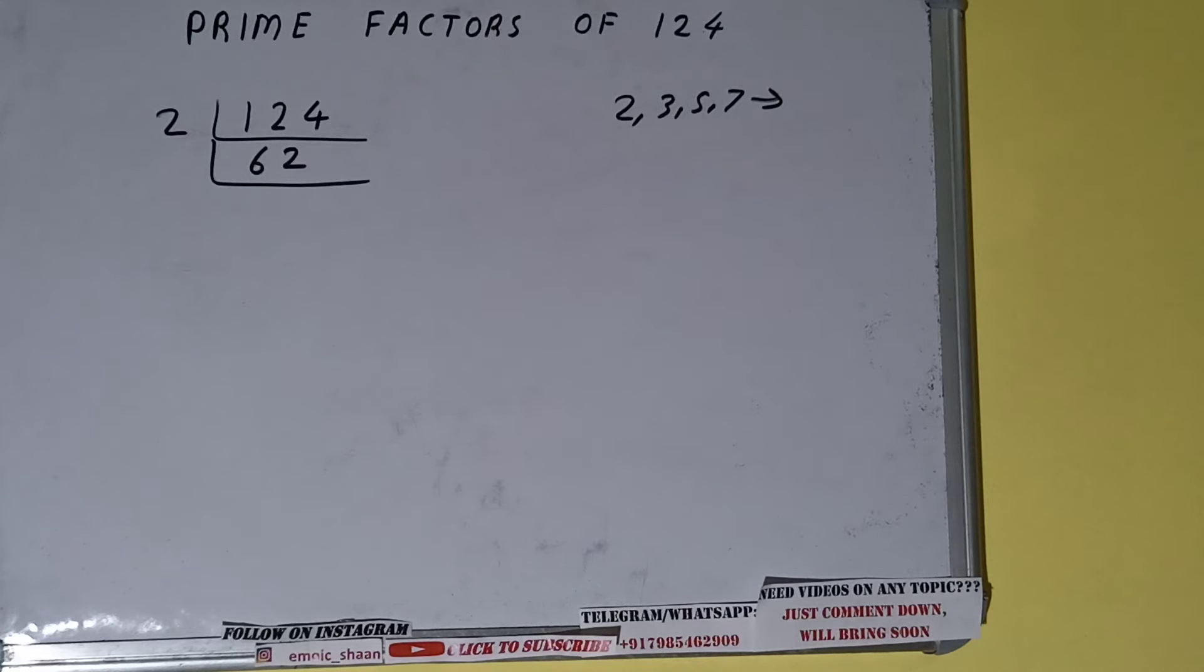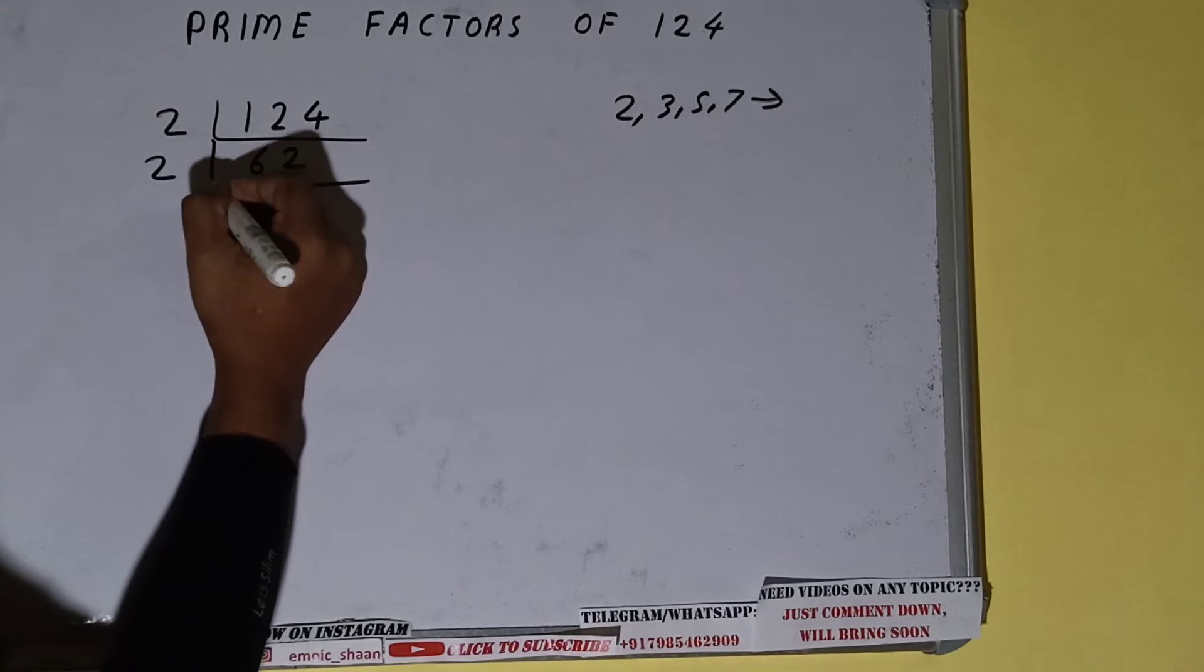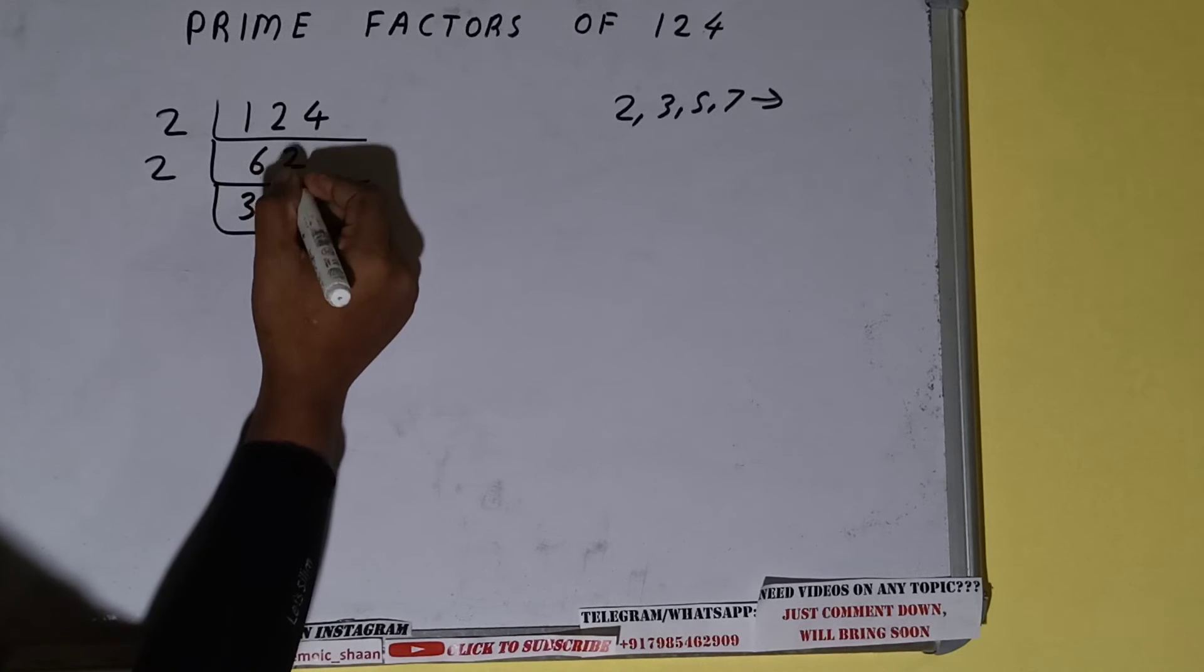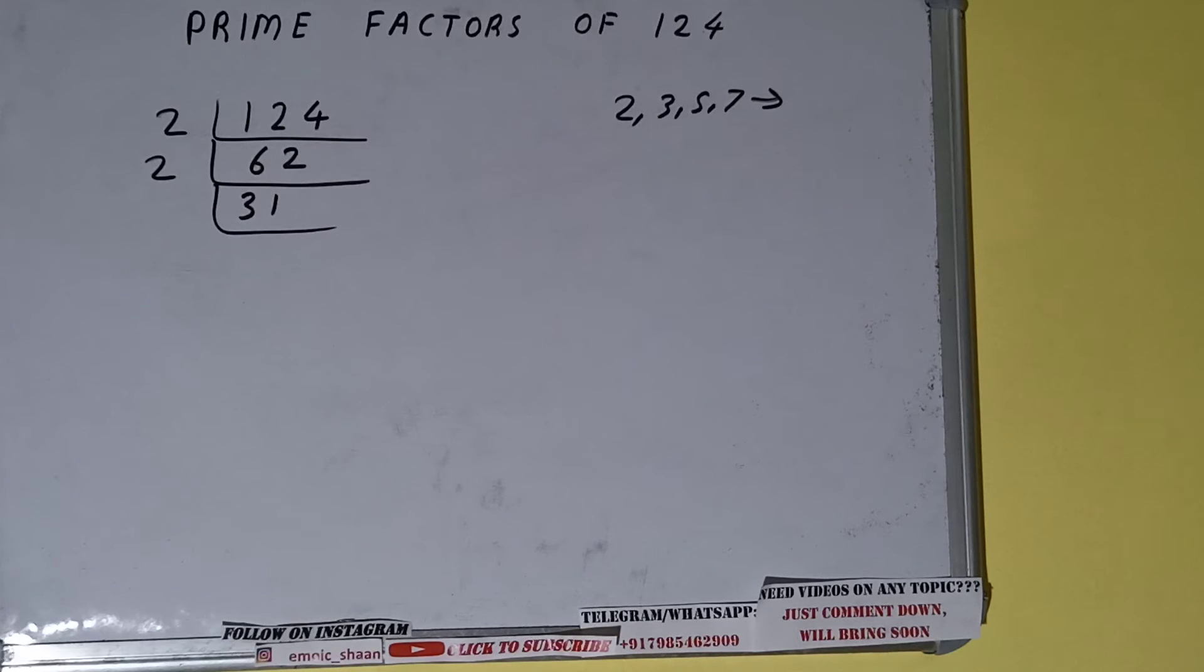Is 31 again divisible by two? The answer is no, because the number is odd. And 31 is a prime number, so it is only divisible by itself, that is 31, and one.